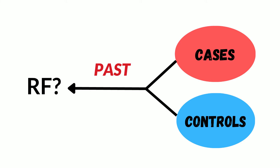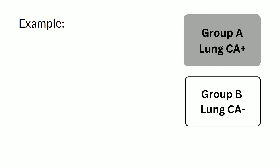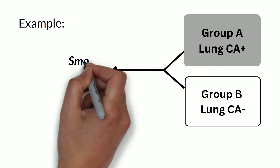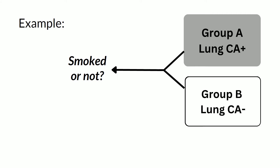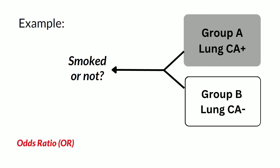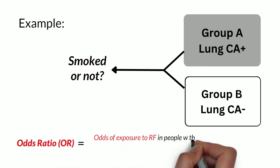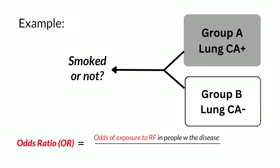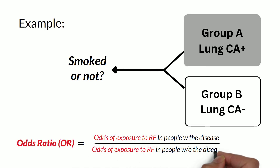So you're going back in time to find out if the patients with the disease were exposed to the risk factor or not. For example, let's say group A has lung cancer and group B does not have lung cancer. Now you want to find out if these people smoked or not. You're checking the odds of exposure to the risk factor in people with the disease and comparing that to the odds of exposure to the risk factor in people without the disease, and that will give you the odds ratio.